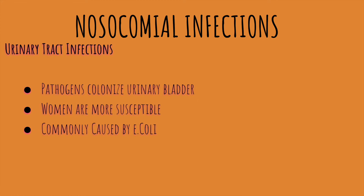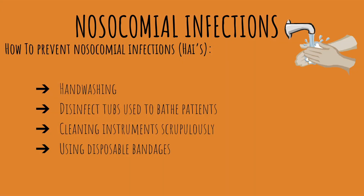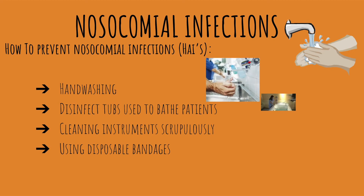Urinary tract infections (UTIs) are the most common type of nosocomial infection, occurring when bacteria colonize the urinary bladder. Women are more susceptible because they have shorter urethras, shortening the distance pathogens must travel to reach the bladder. UTIs are usually caused by E. coli, a bacterium found in the GI tract, though other bacteria can also cause them.